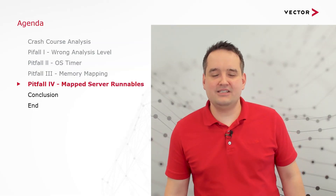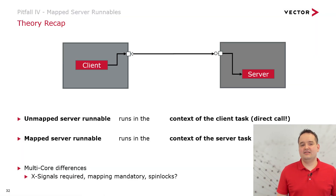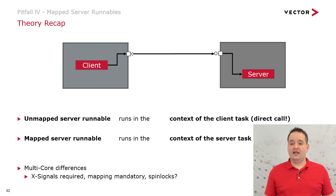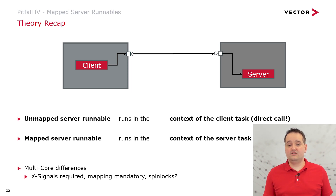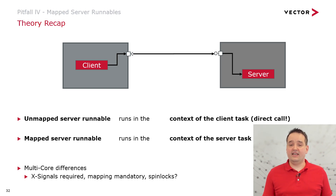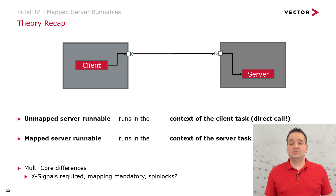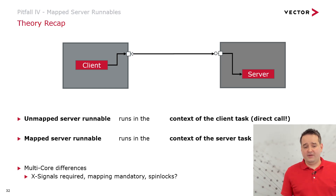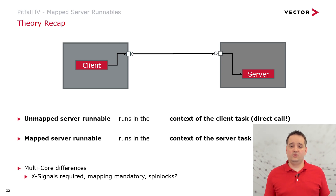Let's move to our last pitfall: mapped server runnables. In client-server communication, the client calls the server. How the call is performed depends on the server runnable mapping. If the server runnable is unmapped, it always runs in the context of the client task — a direct C function call. If we map the server runnable to a task, it runs in the context of the server task. Additionally, for multi-core we need x-signals, and mapping is always mandatory for server runnables — you may also introduce spinlocks to protect data cross-core.